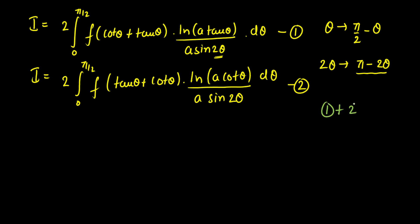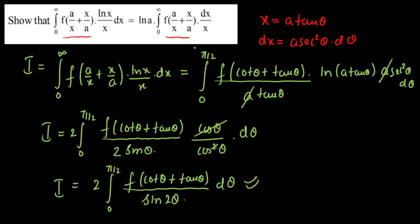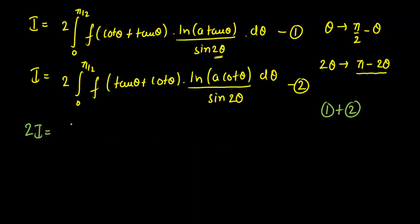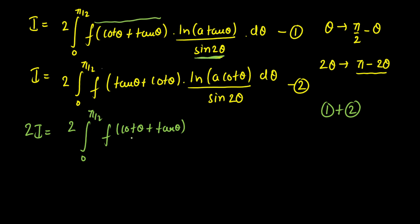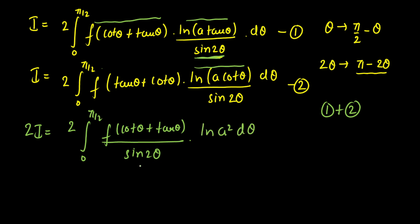Adding equations 1 and 2 to get 2I: the f(cot(θ) + tan(θ)) and sin(2θ) terms are common to both, so we factor them out. The remaining ln terms are ln(a·tan(θ)) + ln(a·cot(θ)). Applying ln(A) + ln(B) = ln(AB), we get ln(a·tan(θ) · a·cot(θ)) = ln(a²) = 2·ln(a). So 2I = 2·∫₀^(π/2) f(cot(θ) + tan(θ)) · 2·ln(a) / sin(2θ) dθ.